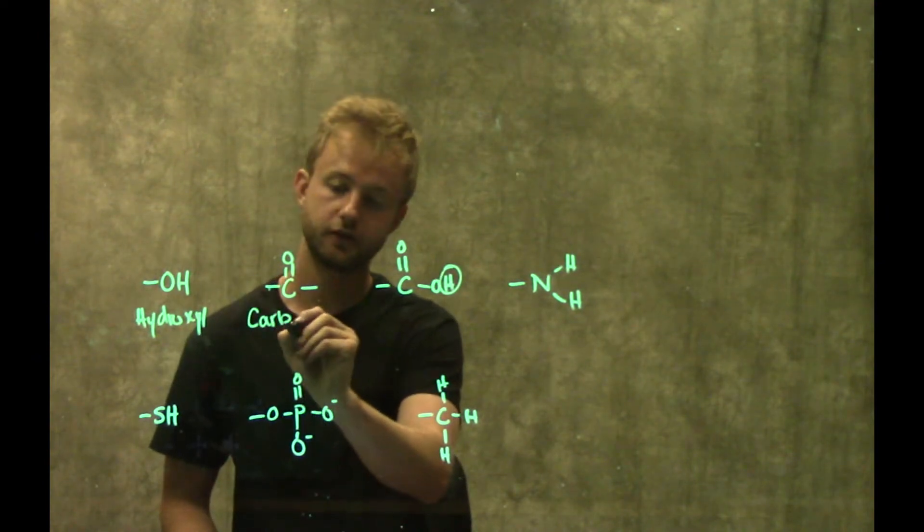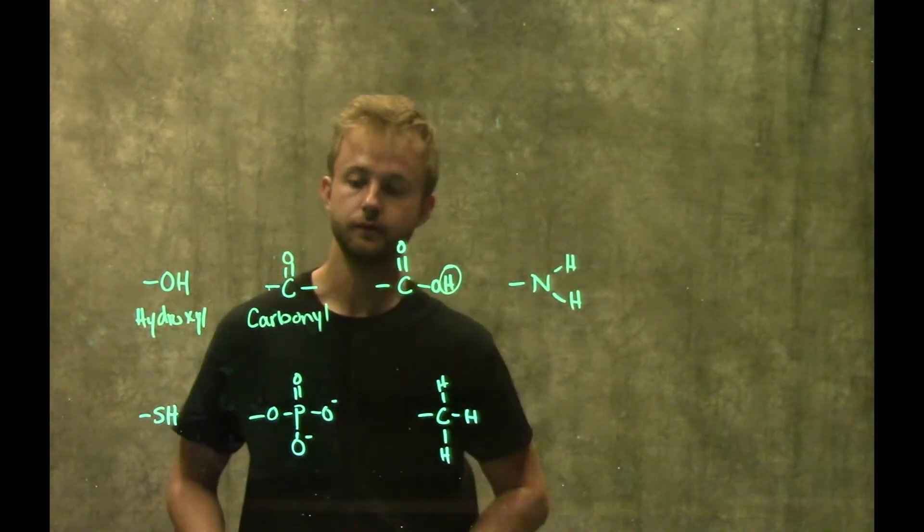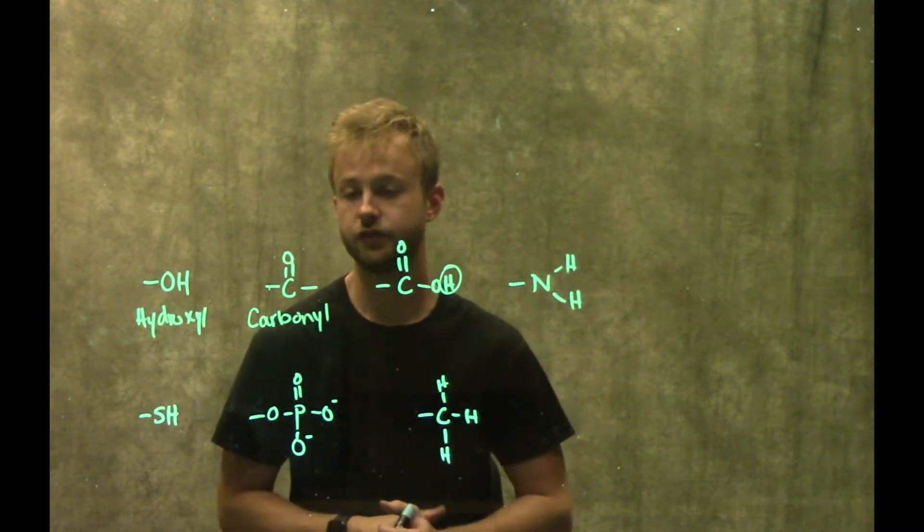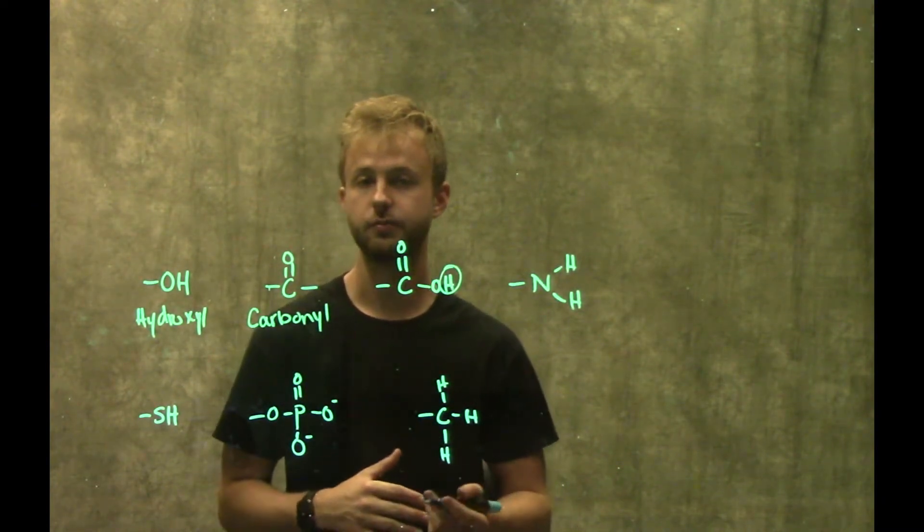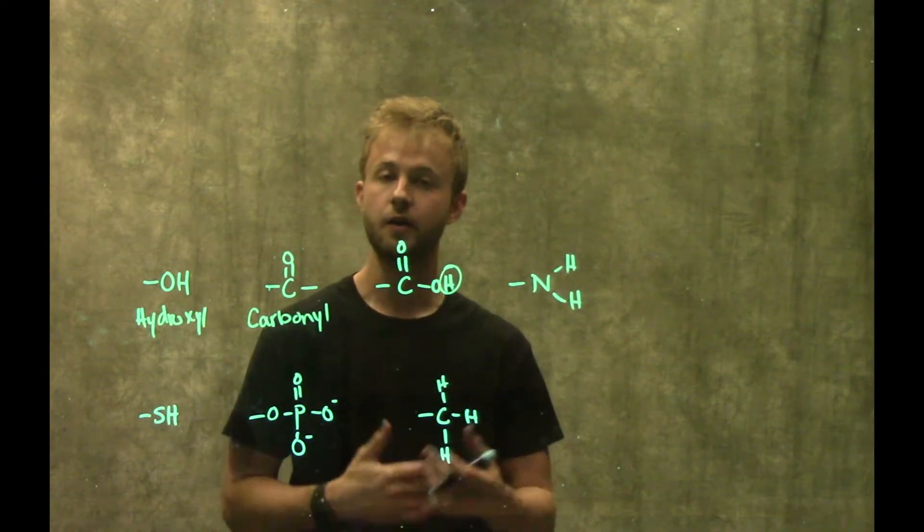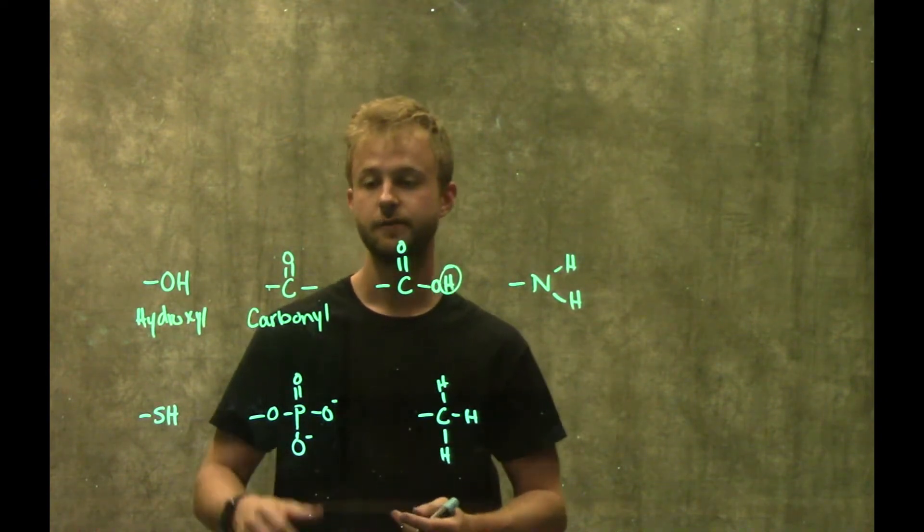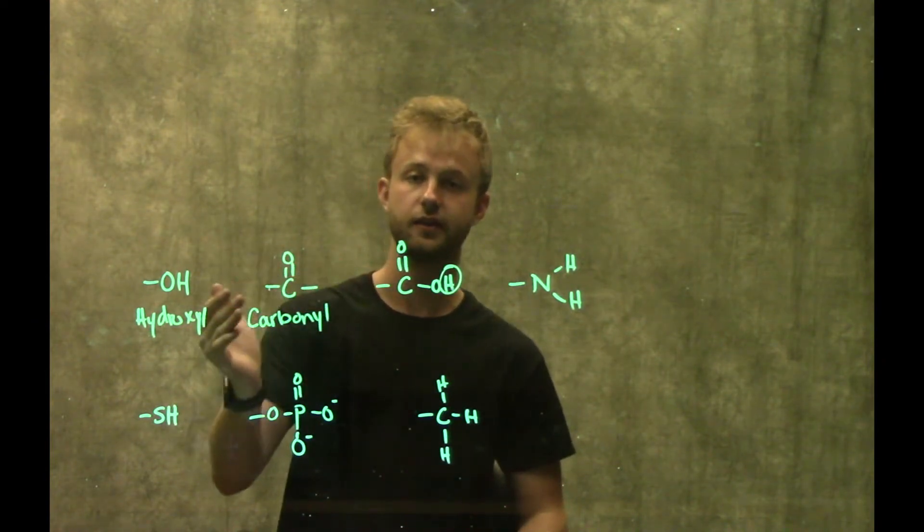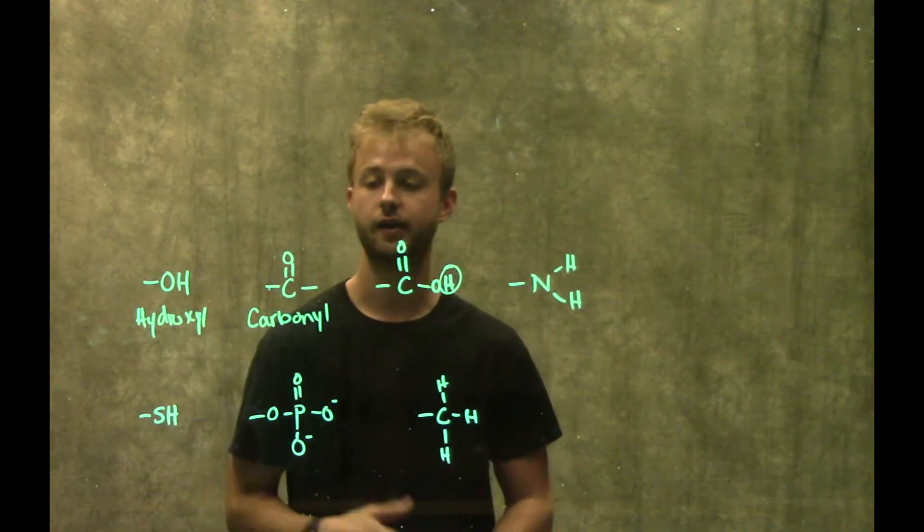This next group is called a carbonyl group. Carbonyl groups are very important in sugars and help us distinguish between the two kinds of sugars—aldoses and ketoses. The difference between those two groups comes from differences in their carbonyl functional group in what it's attached to.